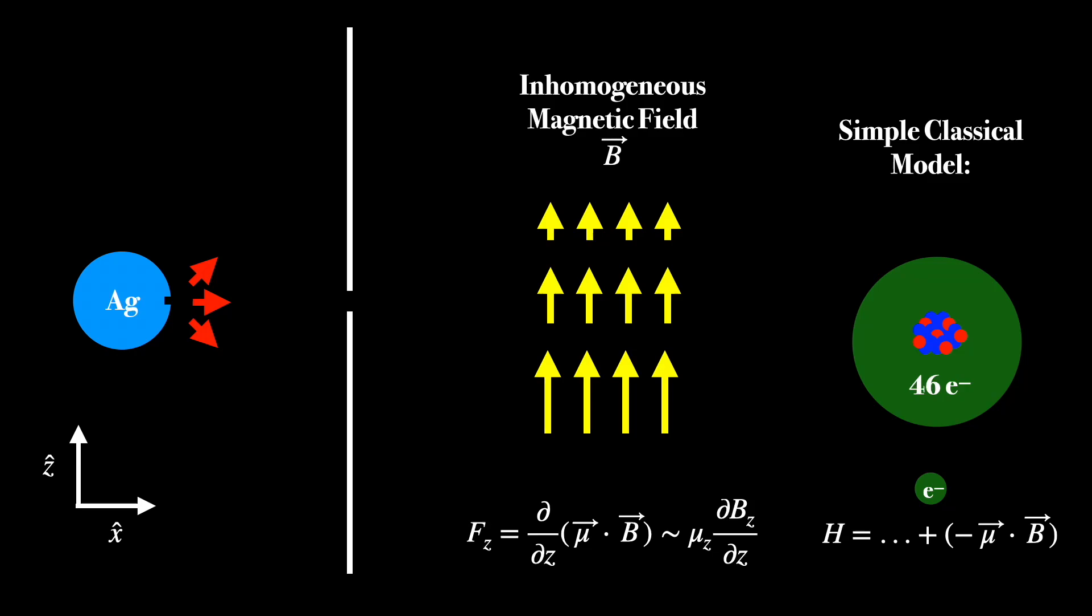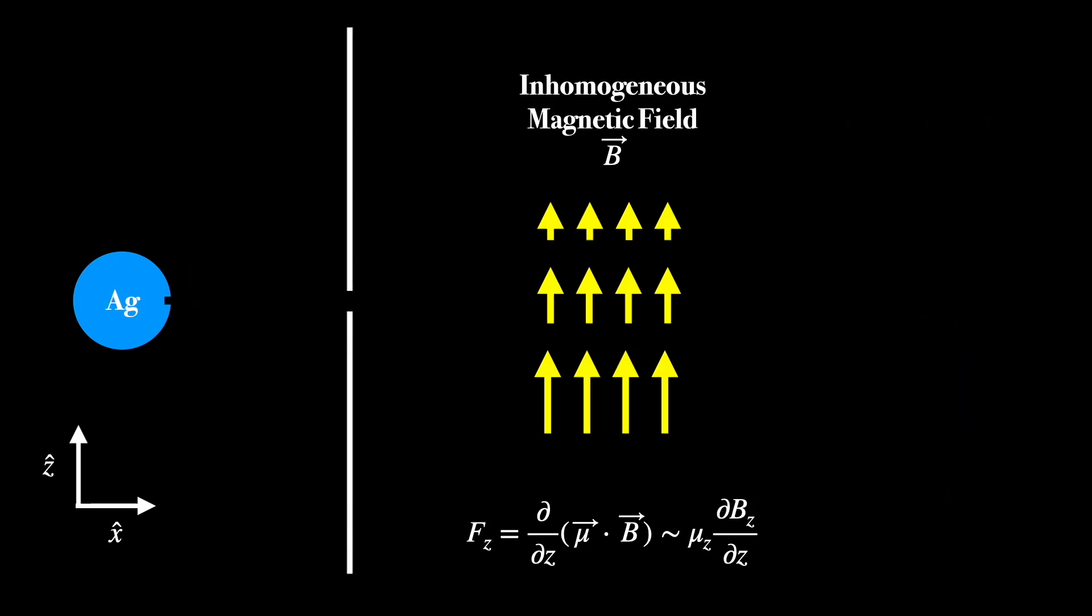Okay, so I'll give you just a few moments to let all that sink in and to think about what we should expect if we repeated this experiment many times. What kind of distribution should we see at the end screen after the atoms go through this magnetic field?